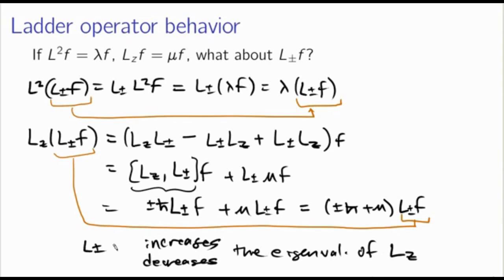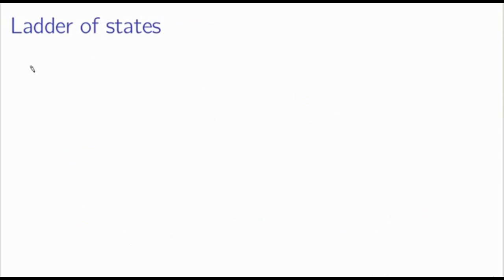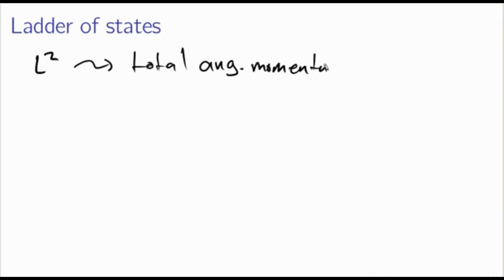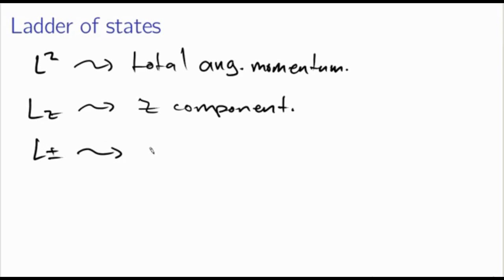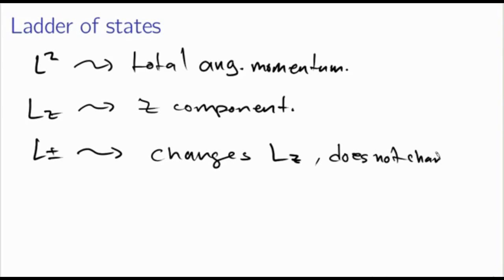Now ask what Lz does to L±·f. I write Lz·(L±·f) = [Lz, L±]·f + L±·(Lz·f) = (±ħ·L±)·f + L±·(μ·f) = (±ħ + μ)·(L±·f). So L±·f is an eigenstate of Lz with eigenvalue μ ± ħ. The ladder operators increase or decrease the eigenvalue of Lz by ħ while leaving the eigenvalue of L² unchanged.